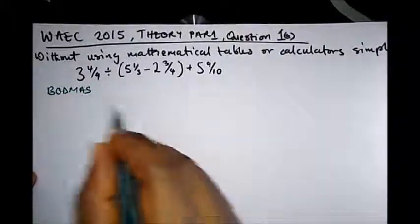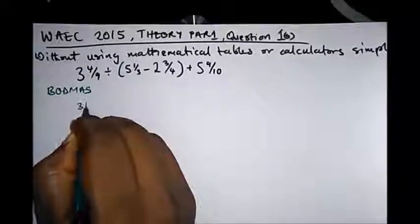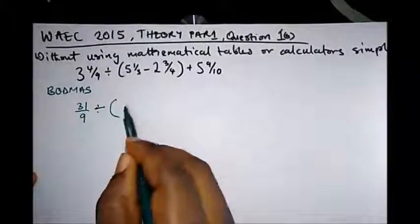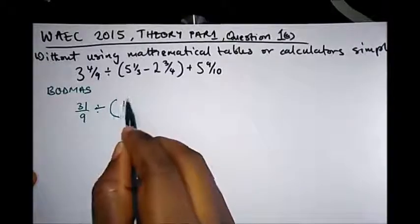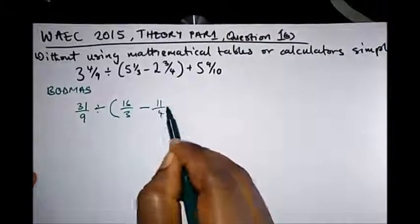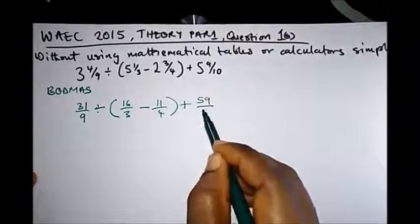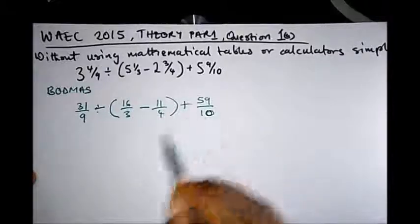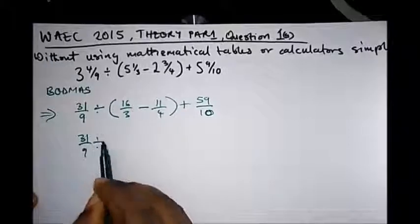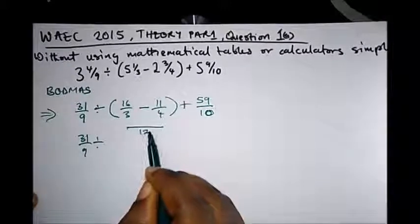Let's change everything to improper fractions. We have 3 times 9 is 27, plus 4, that is 31 over 9. Divided by: in the bracket, we have 5 times 3 is 15, plus 1, giving 16 over 3. Minus 4 times 2 is 8, plus 3, that's 11 over 4. Plus 10 times 5 is 50, plus 9, giving 59 over 10. We perform operations in the bracket first, and the LCM is 12.